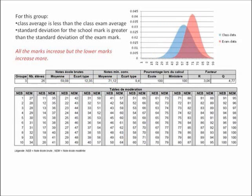Our second to last example shows what can happen when neither the average nor the standard deviation are similar — in this case, no one is happy. I won't comment further on this one, but encourage you to pause and look at it. While ideally you want to avoid surprises by having school mark data match exam mark data, this last example is probably the happiest of surprises: the exam average is significantly higher, the standard deviation is lower, all marks have gone up, and the lower marks have gone up more.